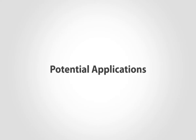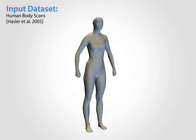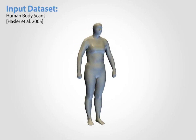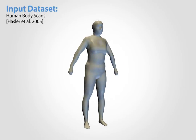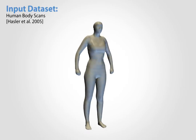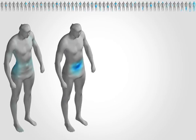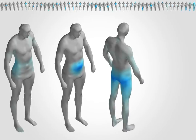Our method works for any mesh data set, such as this collection of human body scans. The automatically discovered components show deformations localized on specific body parts. The scans don't show the same pose exactly.